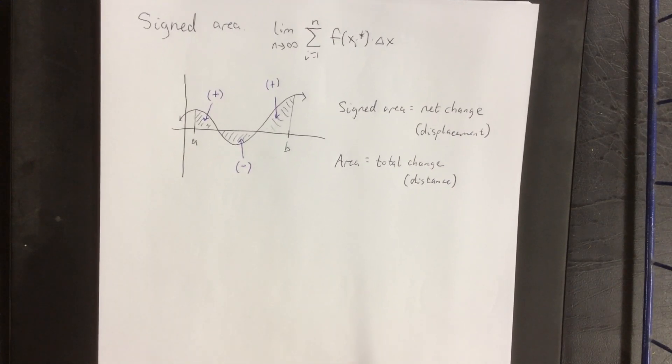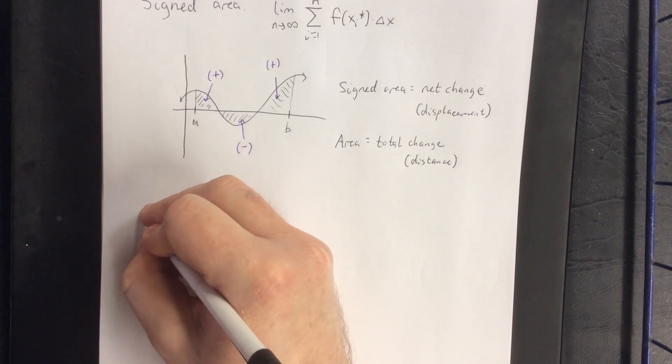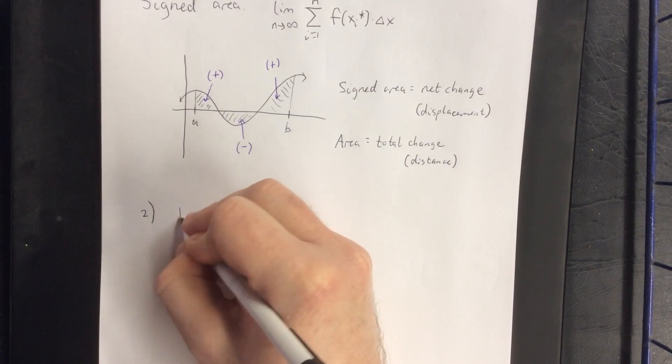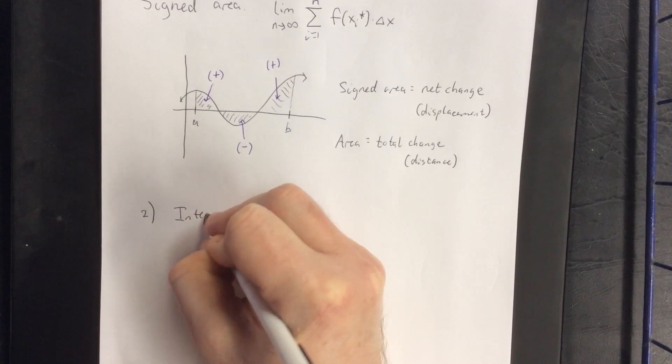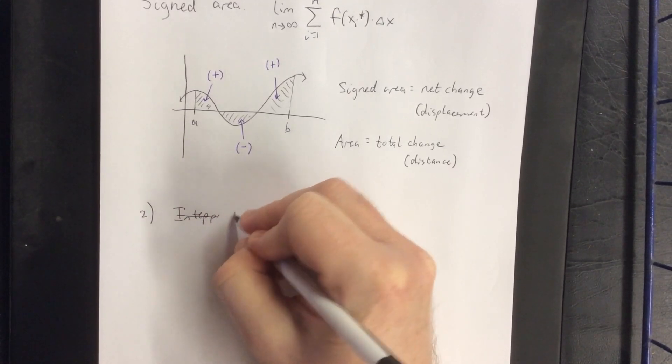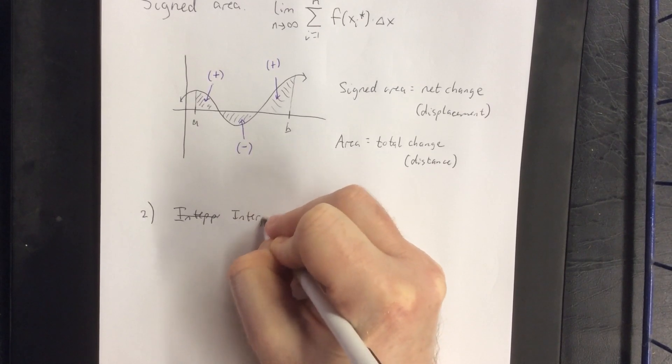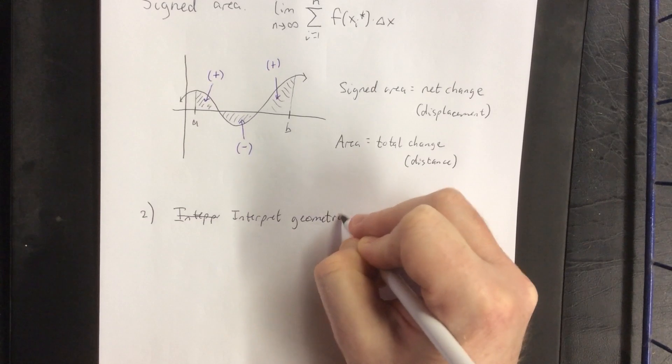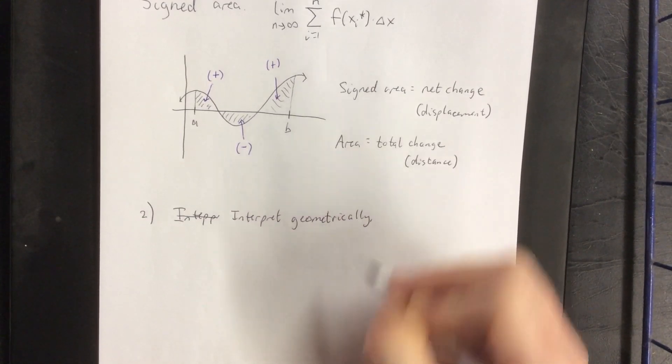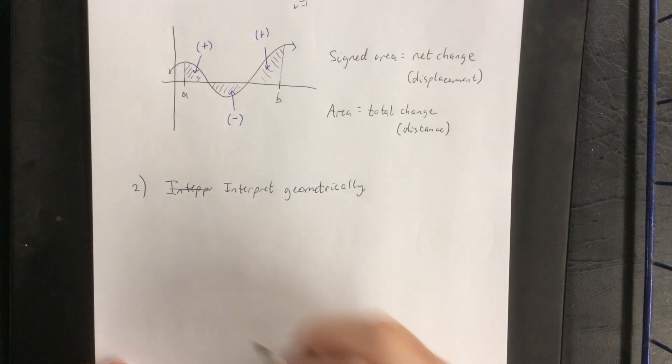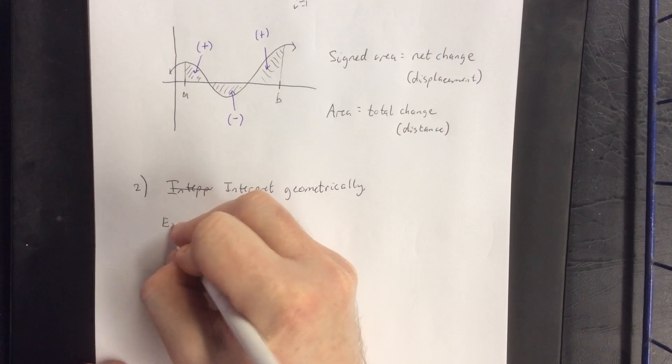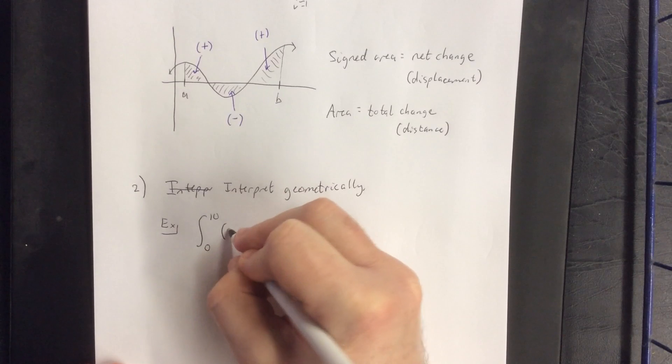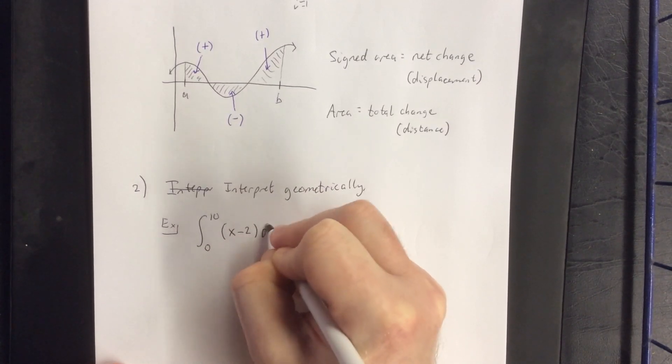Now with that in mind, we're also going to give interpretation number two for how to evaluate a definite integral, which is to interpret geometrically. For example, I could ask for the definite integral from 0 to 10 of x minus 2 dx.